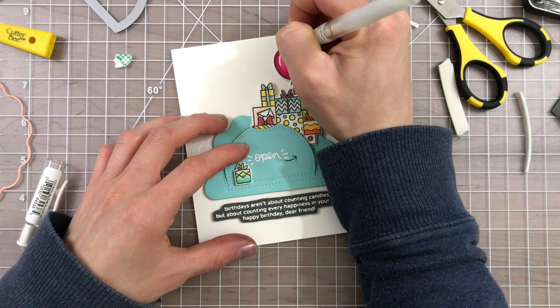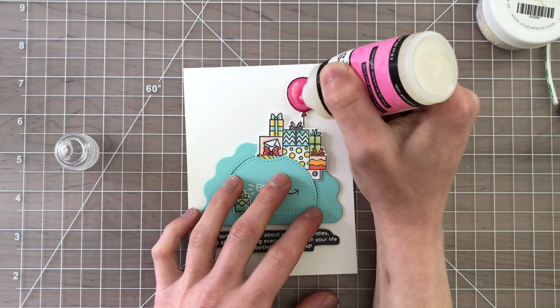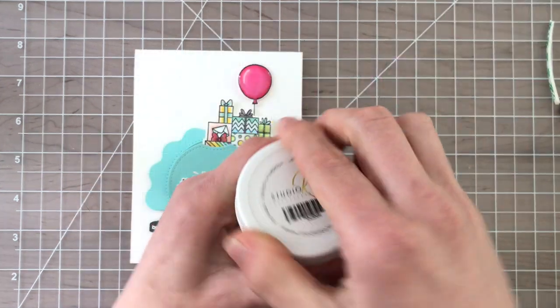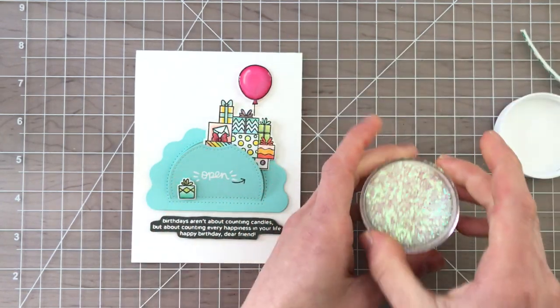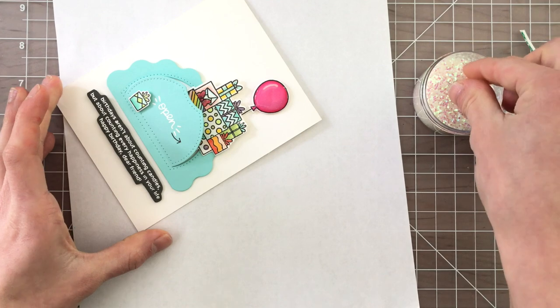I used a gel pen to add some expression marks to the word open and a highlight to the balloon. To embellish the balloon even further I put a layer of glossy accents over top of the balloon and then brought in this really pretty Studio Katia glitter to add some sparkle and shine.